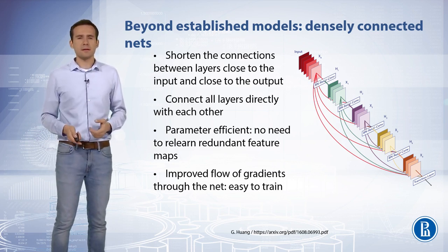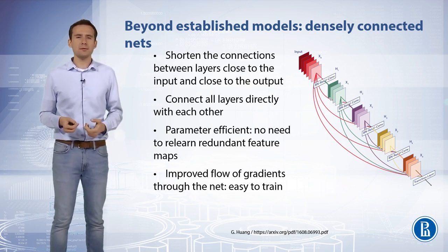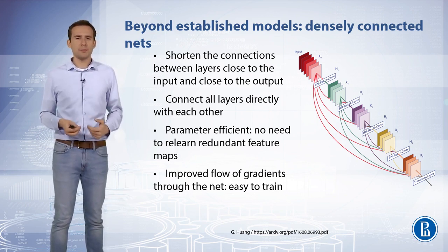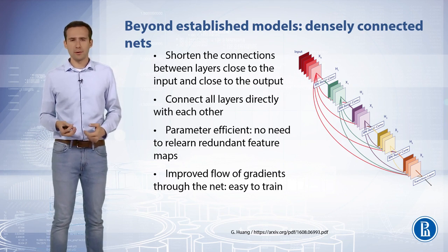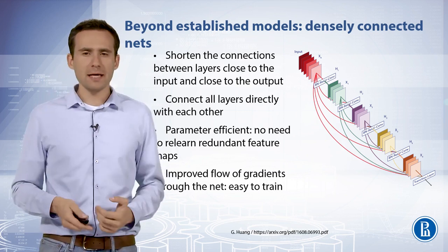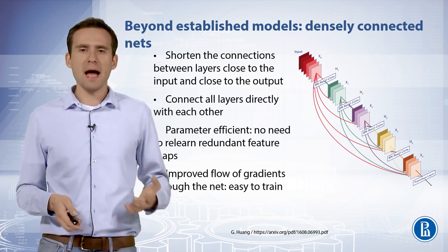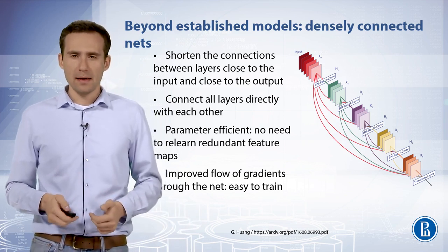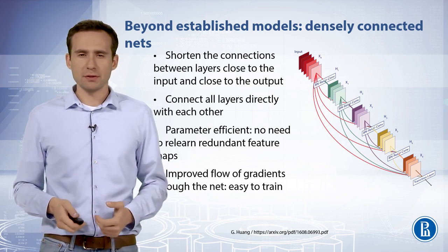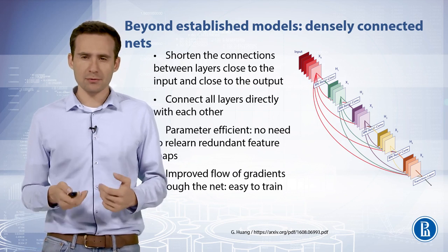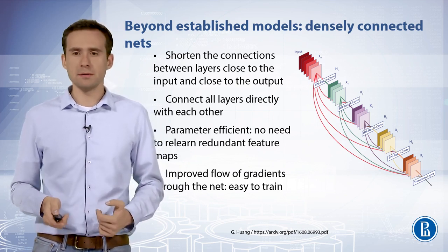DenseNet is parameter efficient — a possibly counter-intuitive effect of this dense connectivity pattern. In fact, it requires fewer parameters than traditional convolutional networks, as there is no need to relearn redundant feature maps. The depth of each convolutional feature map is as low as 12, added to the previous feature maps. Besides better parameter efficiency, one big advantage of DenseNet is the improved flow of information and gradients throughout the network, which makes them easy to train.